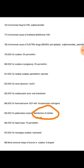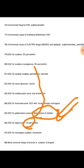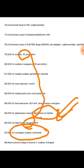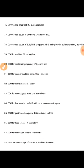Drug of choice for pediculosis corporis is disinfection or burning of clothes, as mites reside on clothing. Drug of choice for head louse is 1% permethrin — note the concentration changes from 5% to 1%. Drug of choice for Norwegian scabies is ivermectin. Most common shape of a scabies burrow is S-shaped.